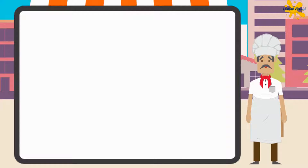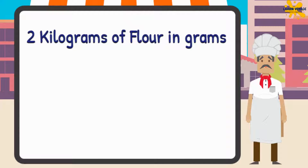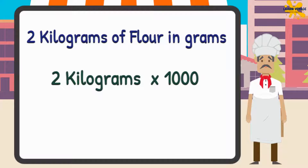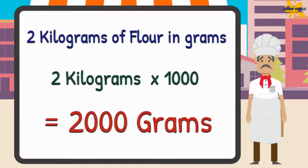Let's say I need 2 kilograms of flour to make my cookies, and I want the value in grams. As 1 kilogram is equal to 1000 grams, we must multiply the value in kilograms by 1000 to get the value in grams. So I will multiply 2 kilograms with 1000, and we get 2000 grams. That's so simple.